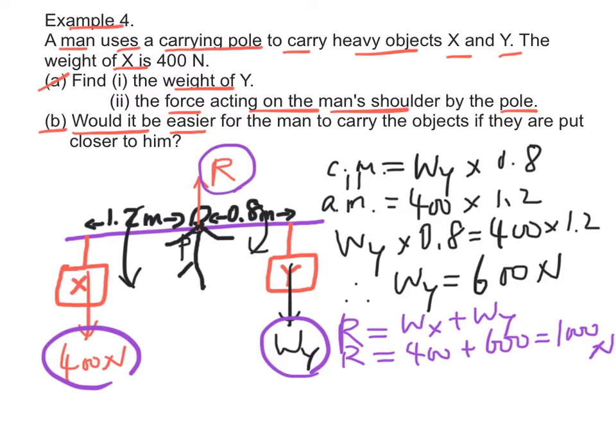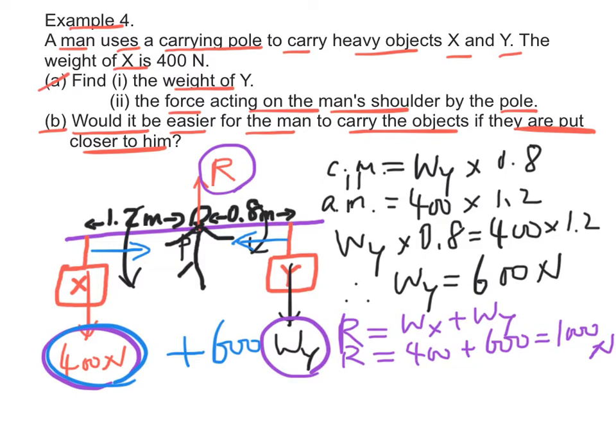Part B: would it be easier for the man to carry the objects if they are put closer to him? Even if X and Y are put closer to the man, the total downward force is still equal to 400 plus 600 N, which is 1000 N. Therefore, the reaction force acting on the shoulder of the man remains the same, so it would not be easier for him to carry the objects.